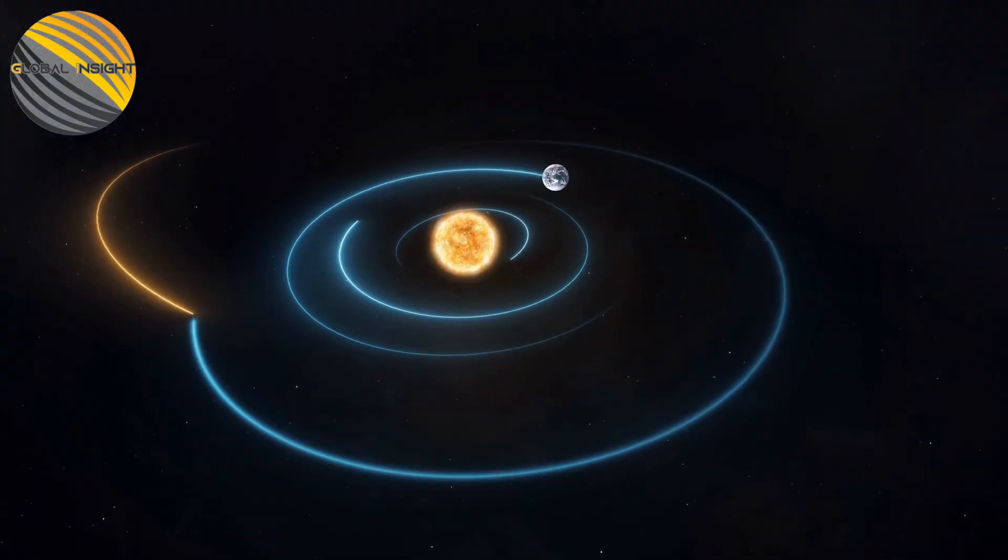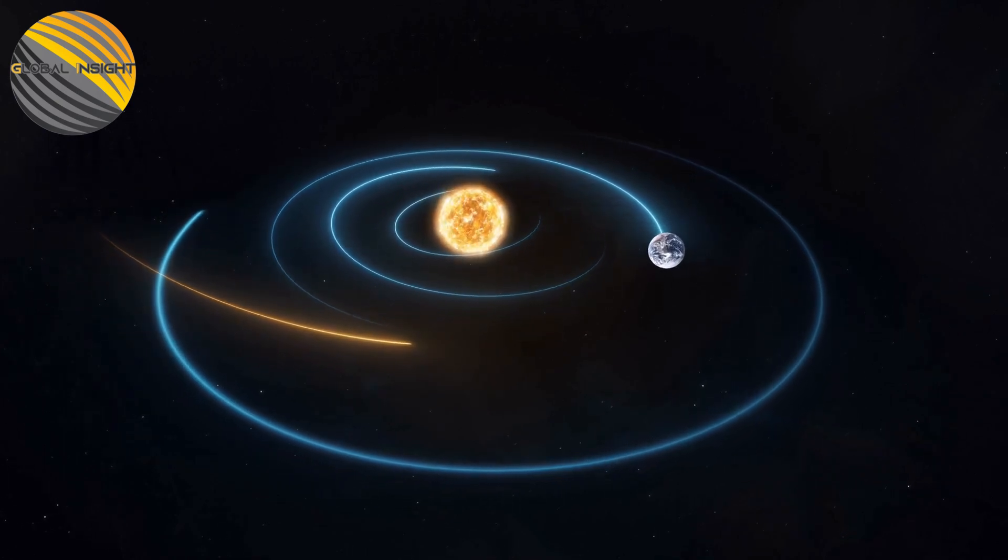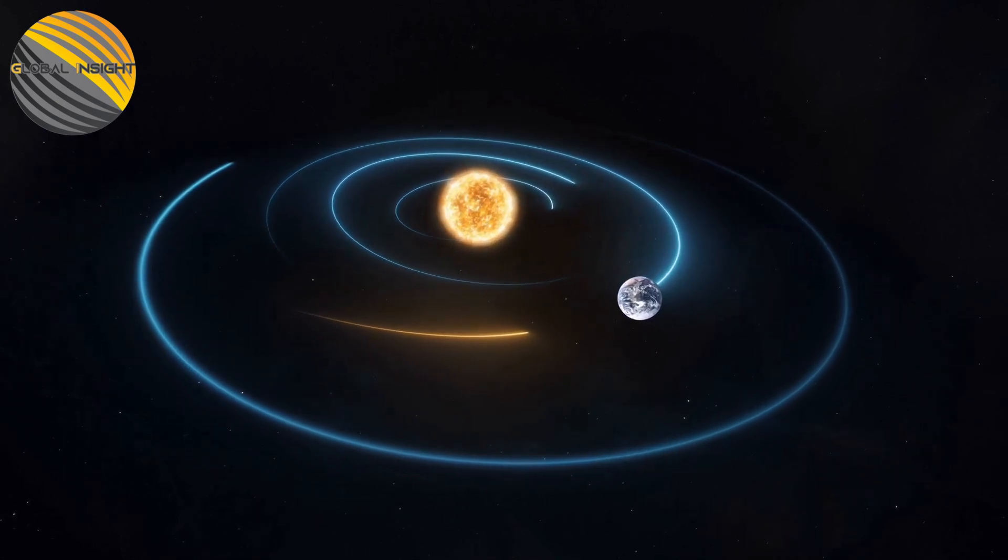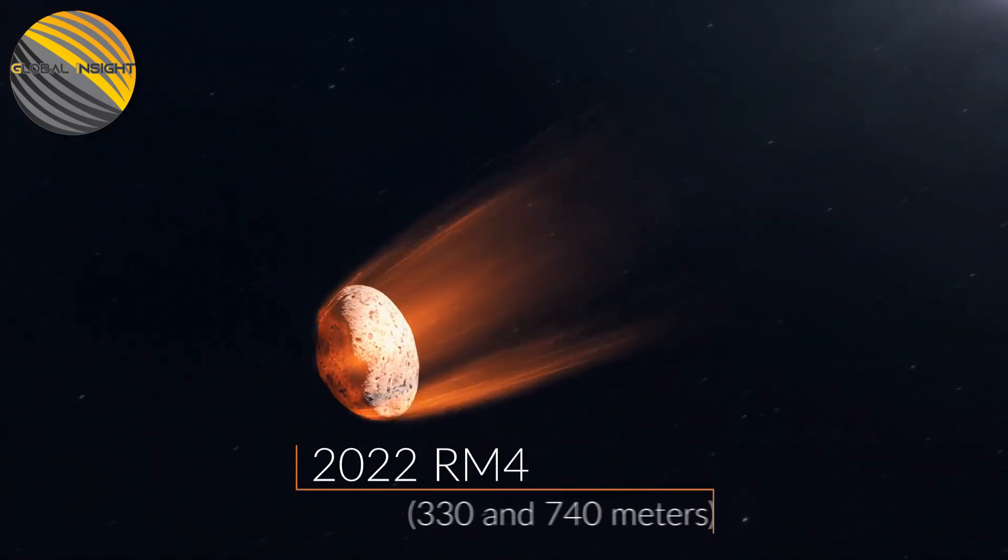NASA predicts that just in time for Halloween, a newly discovered potentially hazardous asteroid nearly the size of the world's tallest skyscraper will pass Earth. The asteroid, which is named 2022 RM4,